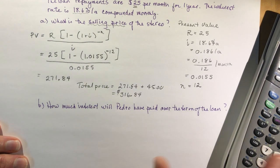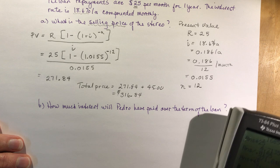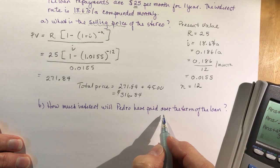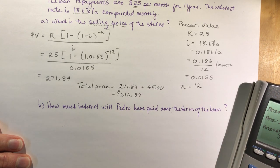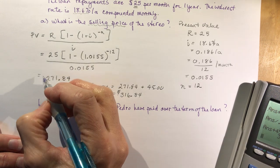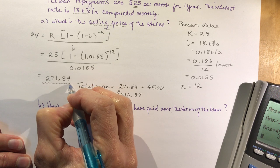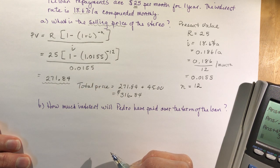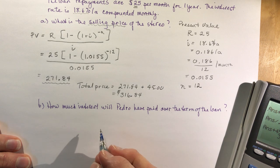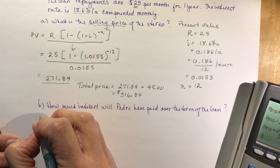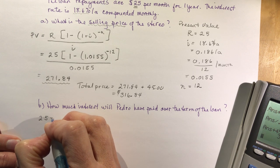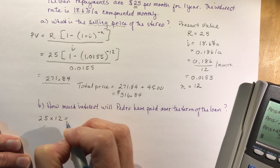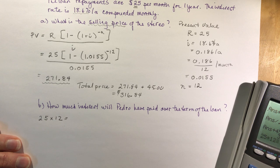The last question says, how much interest will Pedro have paid over the term of the loan? You need to know how much has Pedro paid. This was the present value of his loan payments. If you figure out what he paid, he paid $25 every month. 25 every month for one year, what did he pay? What's 25 times 12? You should do that in your head. $300.